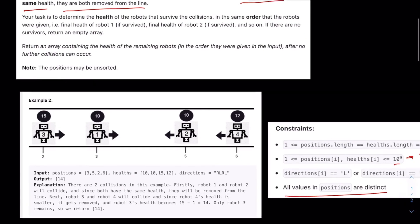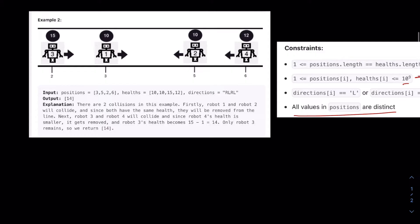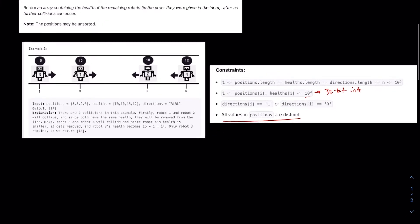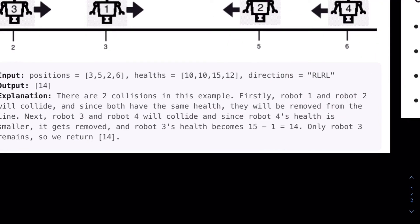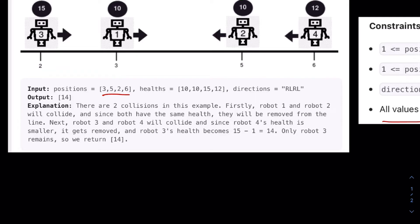The first thing we can kind of think about is a naive approach, right? Is to just simulate. Simulate along our number line, so actually move every single robot physically. So have a robot on 3, have a robot on 5, have a robot on 2 and 6, all these indices, and just move them based on their direction and watch all the collisions happen.